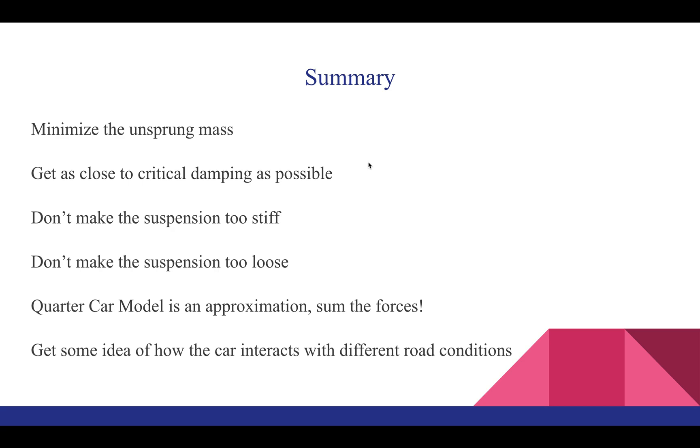In summary we want to minimize the unsprung mass. You want to have as light as possible the system on the bottom so that the car itself can safely return to zero or its initial position without having too many oscillations. You want to get as close to critical damping as possible with your zeta equal to one, but you want to have a slightly underdamped case to allow for some flexibility. You want to avoid making your suspension too stiff because that's going to make it very uncomfortable and an undesirable ride. You don't want to make the suspension too loose though because then the system is going to just keep oscillating back and forth and your car is going to have a very hard time absorbing any of those impact forces.